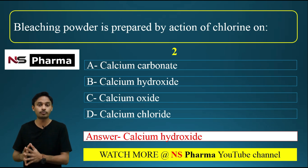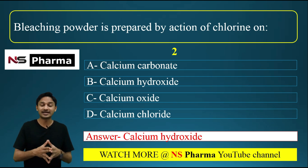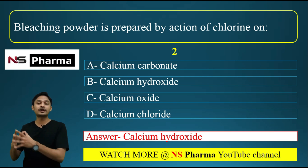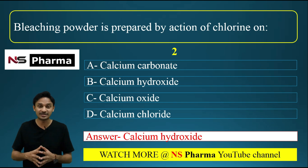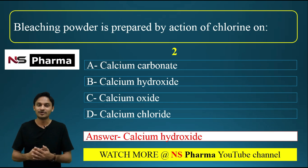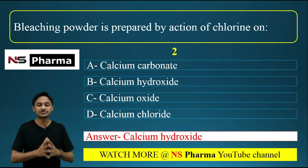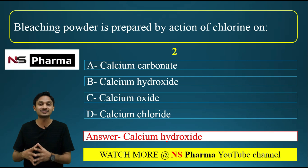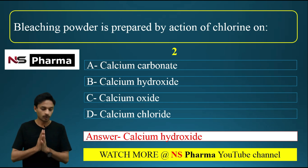Chlorine and calcium hydroxide react together to form bleaching powder, also known as calcium hypochlorite. Bleaching powder is also called chlorinated lime. Calcium hydroxide itself is known as slaked lime, while calcium oxide (option C) is known as quicklime.